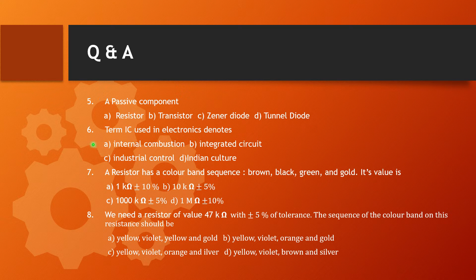Next, question number 6: The term IC used in electronics denotes — Option A internal combustion, Option B integrated circuit, Option C industrial control, Option D Indian culture. The correct answer is Option B, integrated circuit. In electronics, IC stands for integrated circuit.